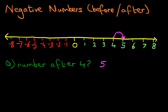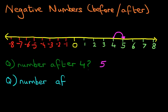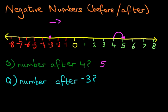Now we are going to go through our second question. This time around, we want to know the number after minus 3. First, let's find minus 3 — here it is. Now the number after: you'll be thinking it should be minus 4. Well, if you draw the number line, you know that you're not going to the left. You're actually going in the same direction as before — the next number is always on the right hand side. So the number after minus 3 is minus 2.